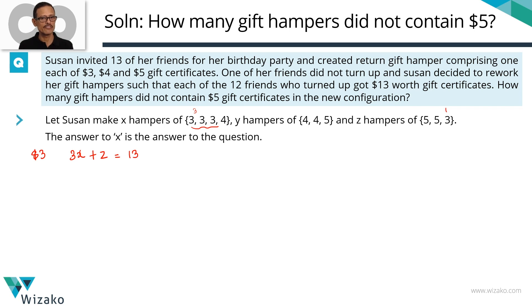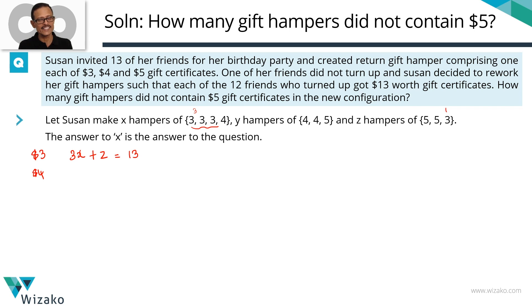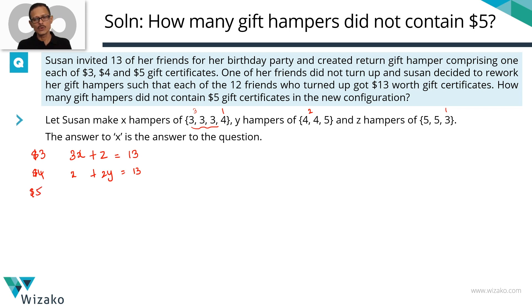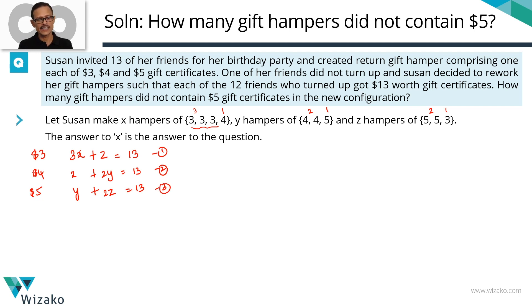Pause the video, create equations for $4 and $5, then play and check. For the $4 certificates: the first hamper format has one $4, giving x; the second format ($4,$4,$5) has two $4 certificates, giving 2y. So x plus 2y equals 13 — Equation 2. For the $5 certificates: the second format has one $5 per hamper giving y, and the third format has two $5 certificates giving 2z. So y plus 2z equals 13 — Equation 3.